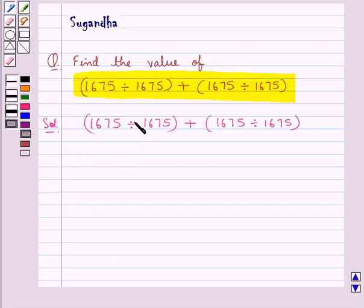So when 1675 is divided by 1675, we get its value as 1, plus 1675 divided by 1675 which is also 1. Now 1 plus 1 is equal to 2.